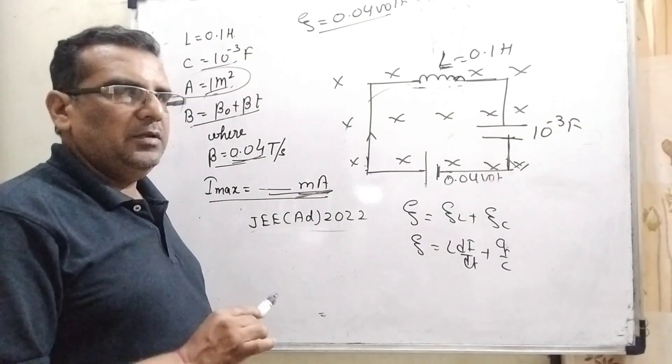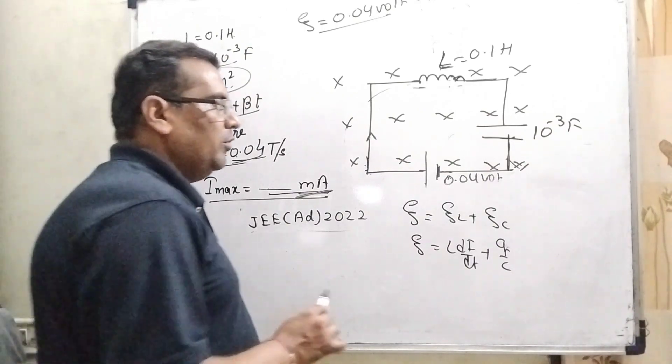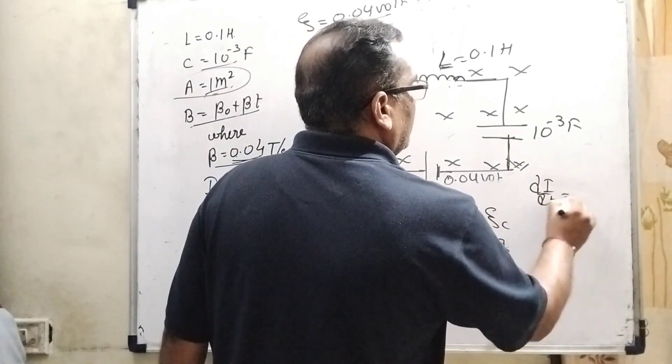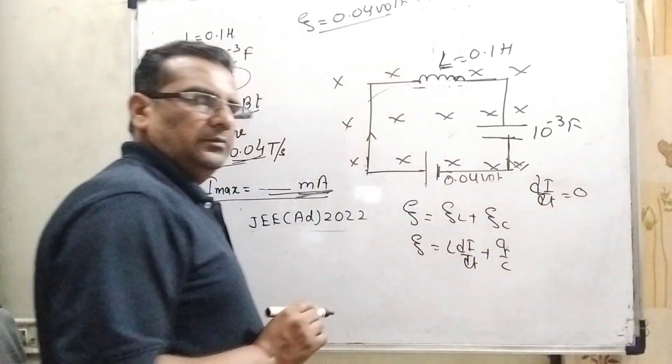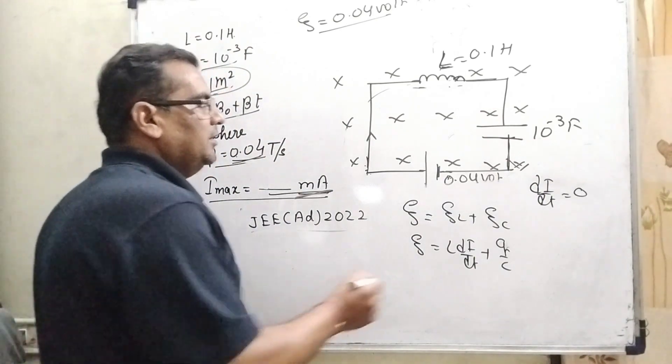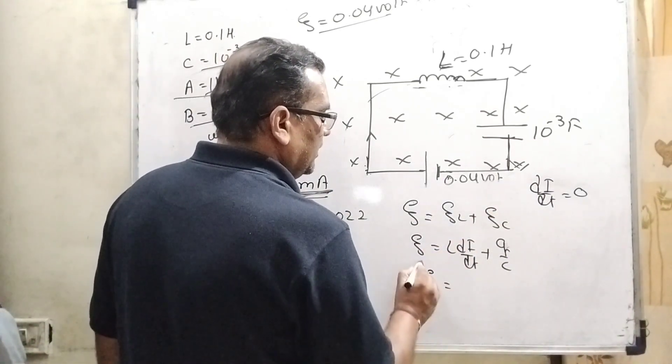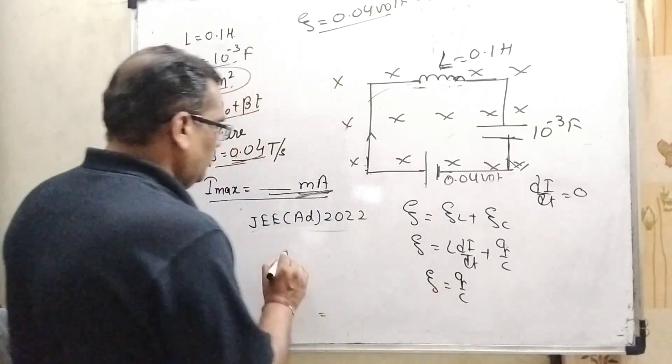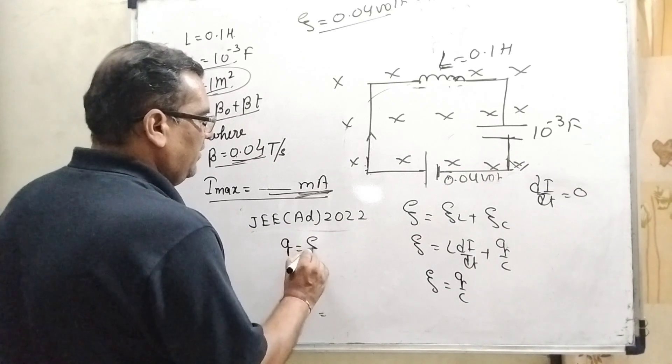Here we have to find out the maximum amount of current. So therefore, by using the mathematical concept maxima minima, you are well known about that, dI by dt is equal to 0. So we get the value of maximum amount of current. Then substitute this value, then we get EMF equal to Q by C, then Q can be written as EMF into C.